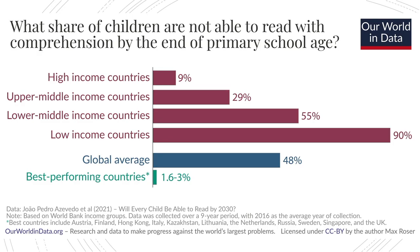What share of children are not able to read with comprehension by the end of primary school age is a basic question asked in this paper. These are the kinds of questions we ask in the context of India as well, because a lot of funds are spent on primary education. The global average is 48%, meaning almost half the children who have finished primary schooling are not able to read with comprehension — referring to learning losses.